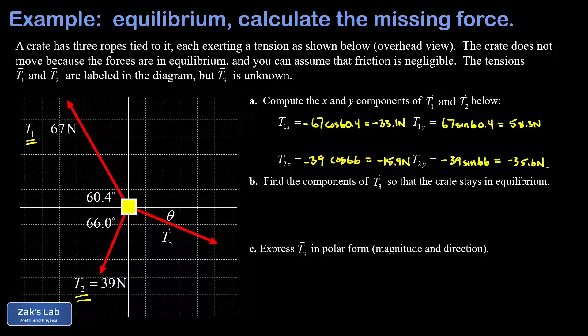In part b we're asked to get the components of t3—that's our unknown tension—so that the crate stays in equilibrium. In other words, so the vector sum of all three vectors is zero.